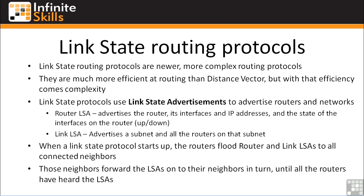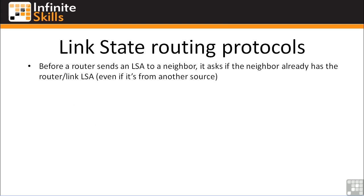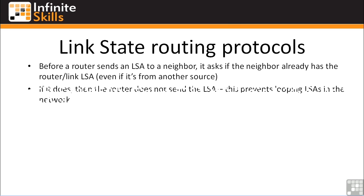Now that might seem a little bandwidth intensive, and it is in some cases. However, link state routing protocols ask the neighbor router: hey, I've got this particular LSA for this router or this link — have you heard about it already from another source? And if the neighbor says yes, I already know about that route, thank you very much, then the sending router says no problem. That one mechanism is really responsible for preventing flooded LSAs from looping over and over throughout the network.